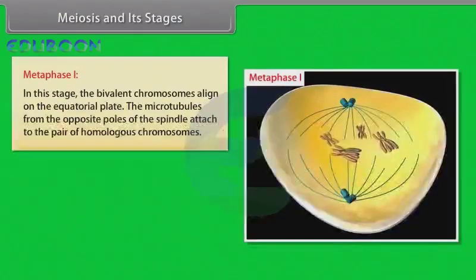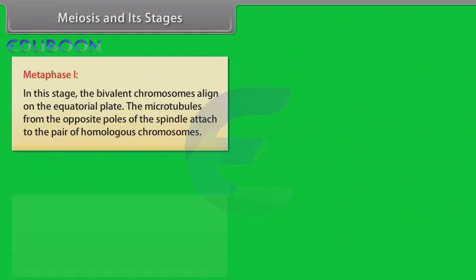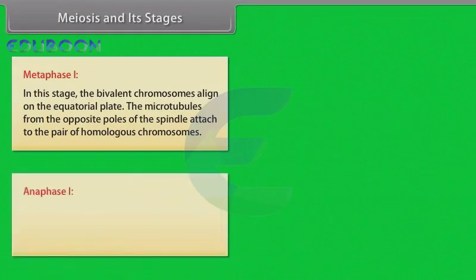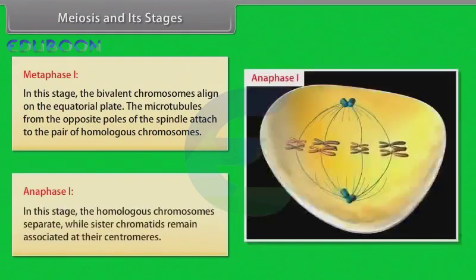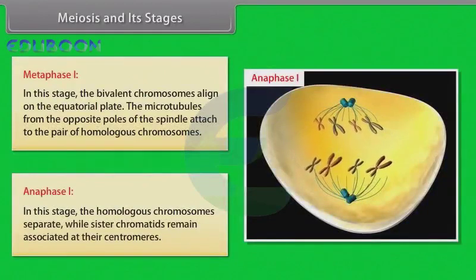After completion of prophase one, metaphase one takes place. In this stage, the bivalent chromosomes align on the equatorial plate. The microtubules from the opposite poles of the spindle attach to the pair of homologous chromosomes. Anaphase one is the next stage. In this stage, the homologous chromosomes separate while sister chromatids remain associated at their centromeres.